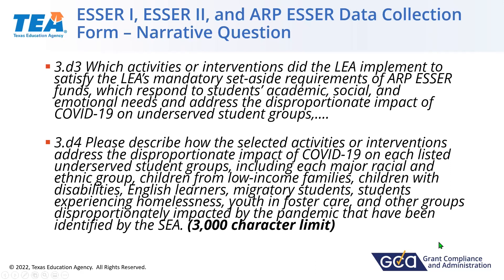The second narrative covers racial and ethnic groups, children from low-income families, children with disabilities, English learners, migrant students, students experiencing homelessness, foster care, and other groups impacted by the pandemic identified by the state. The first question asks you to describe the activity; the second asks how those activities address the impact — they look similar but are different. The 3D3 is more of a listing of activity types; the 3D4 is how those activities actually addressed the disproportionate impact on your student groups. There is a 3,000-character limit. Our system will be programmed to keep you within that limitation.